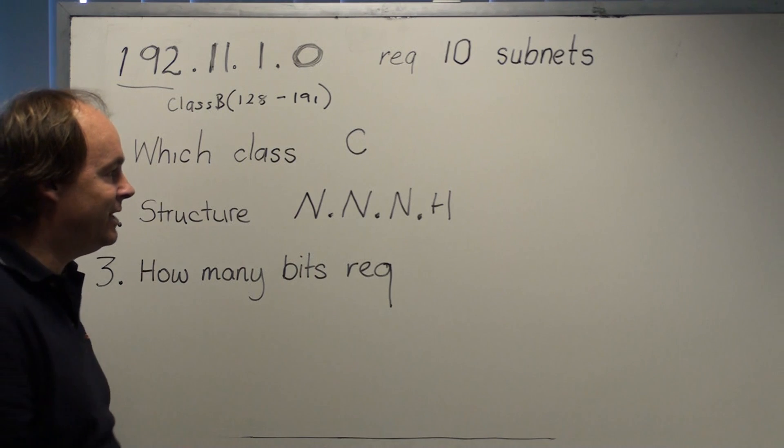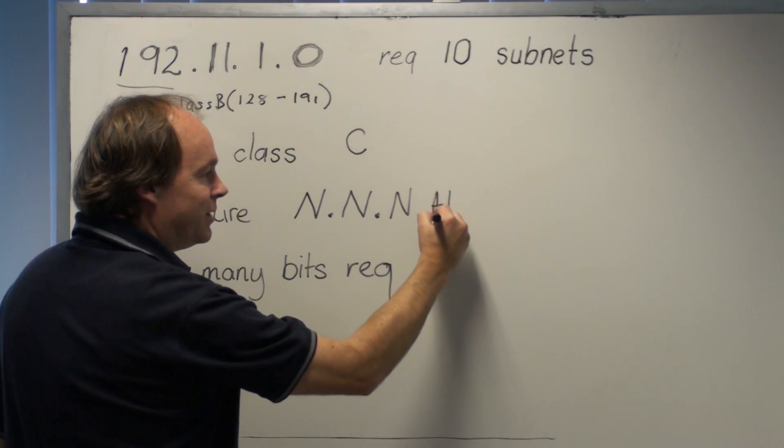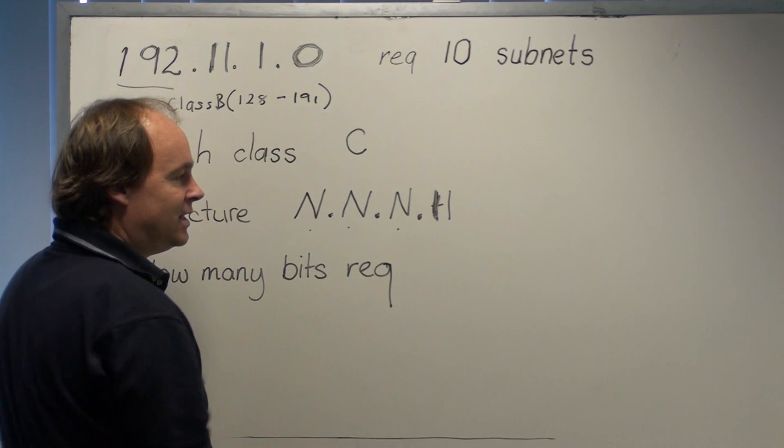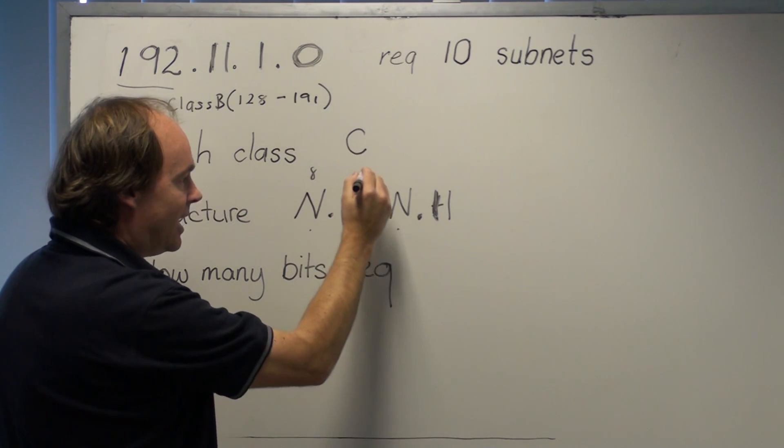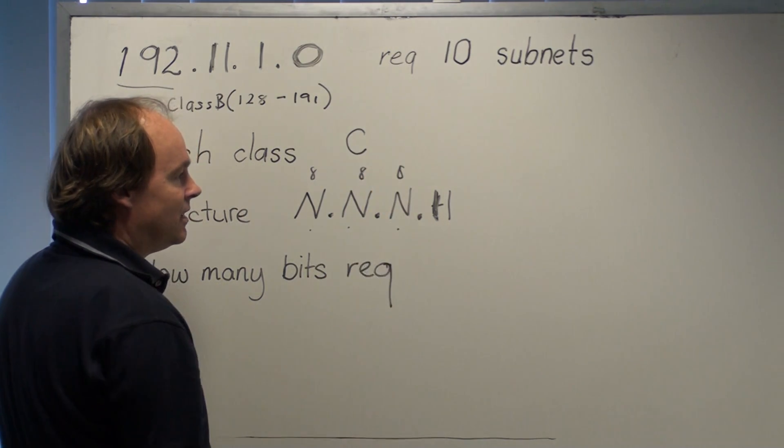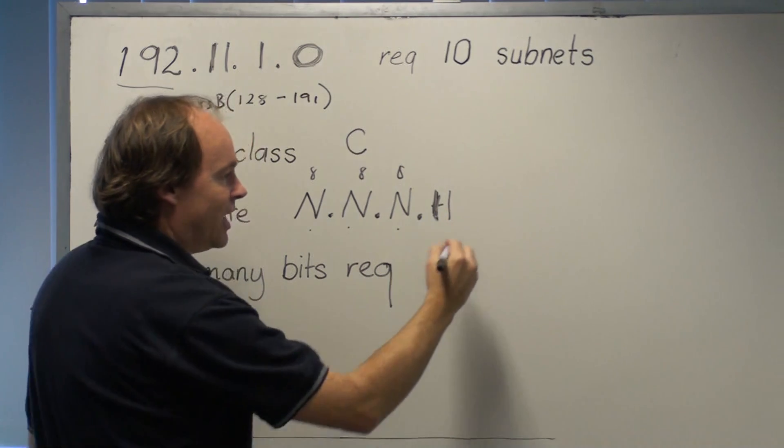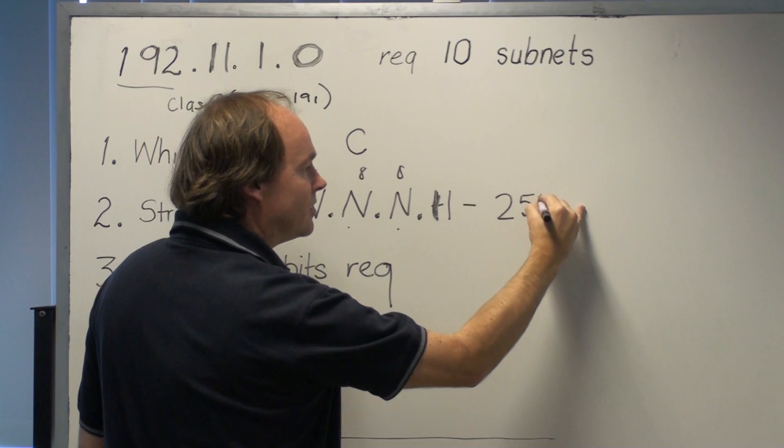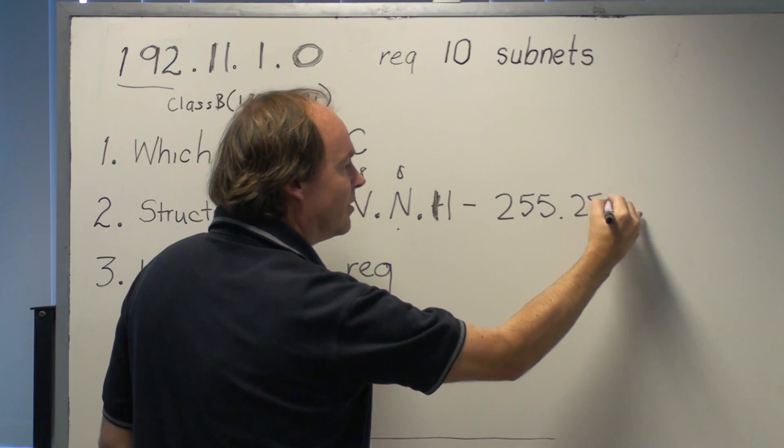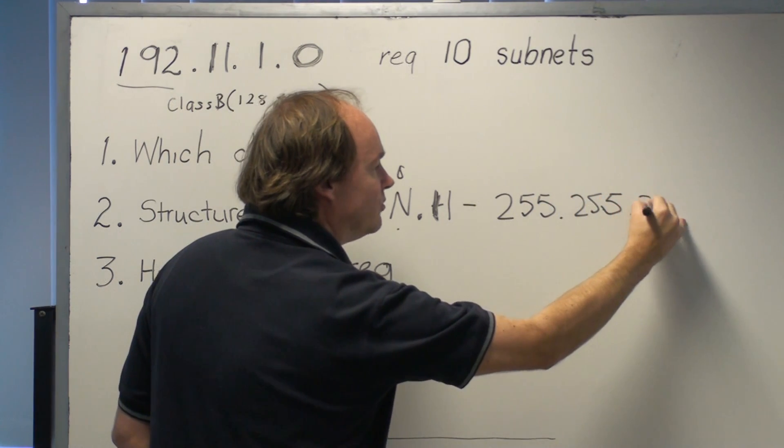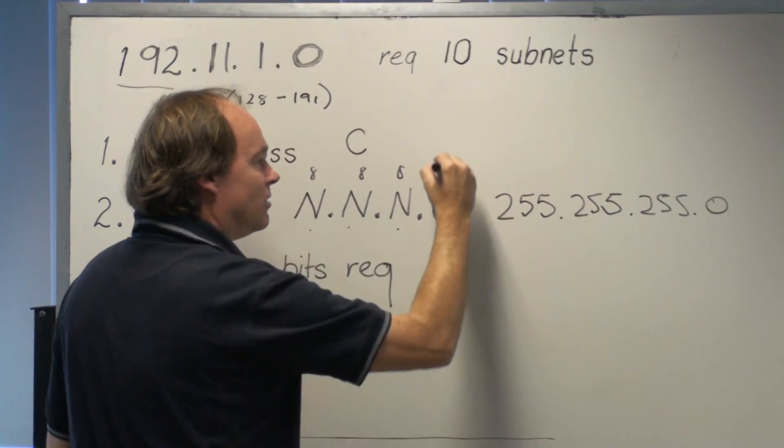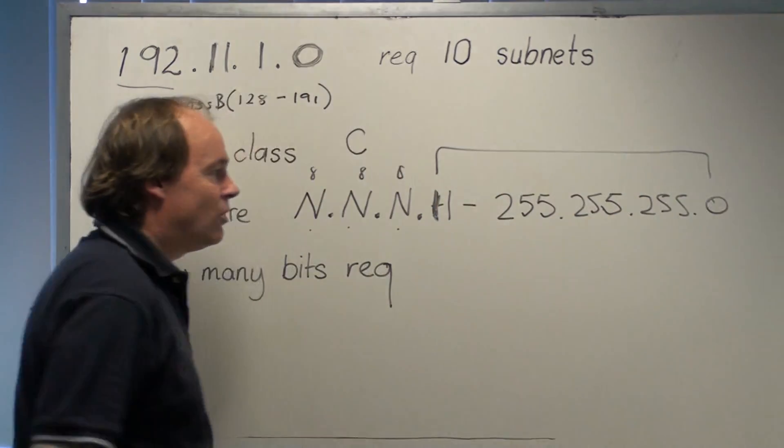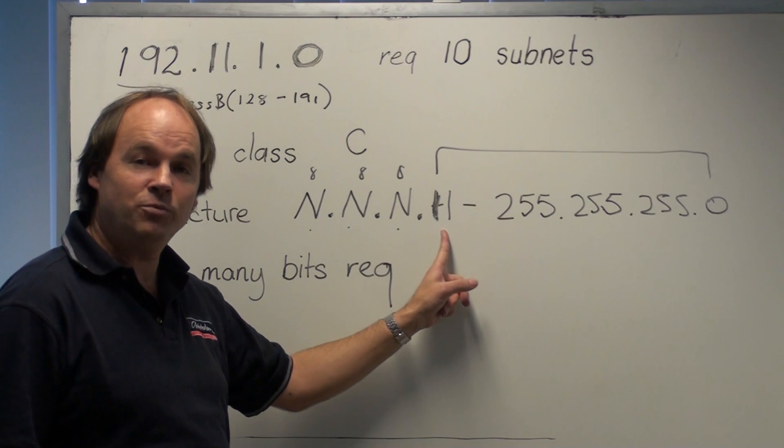And what we understand by that is that if we place a 1 in all positions where there's Ns, and there's 8 Ns, 8 Ns, 8 Ns, we would see that we'd have a mask therefore of 255.255.255.0. That .0 relates to the last octet where there's no network bits.